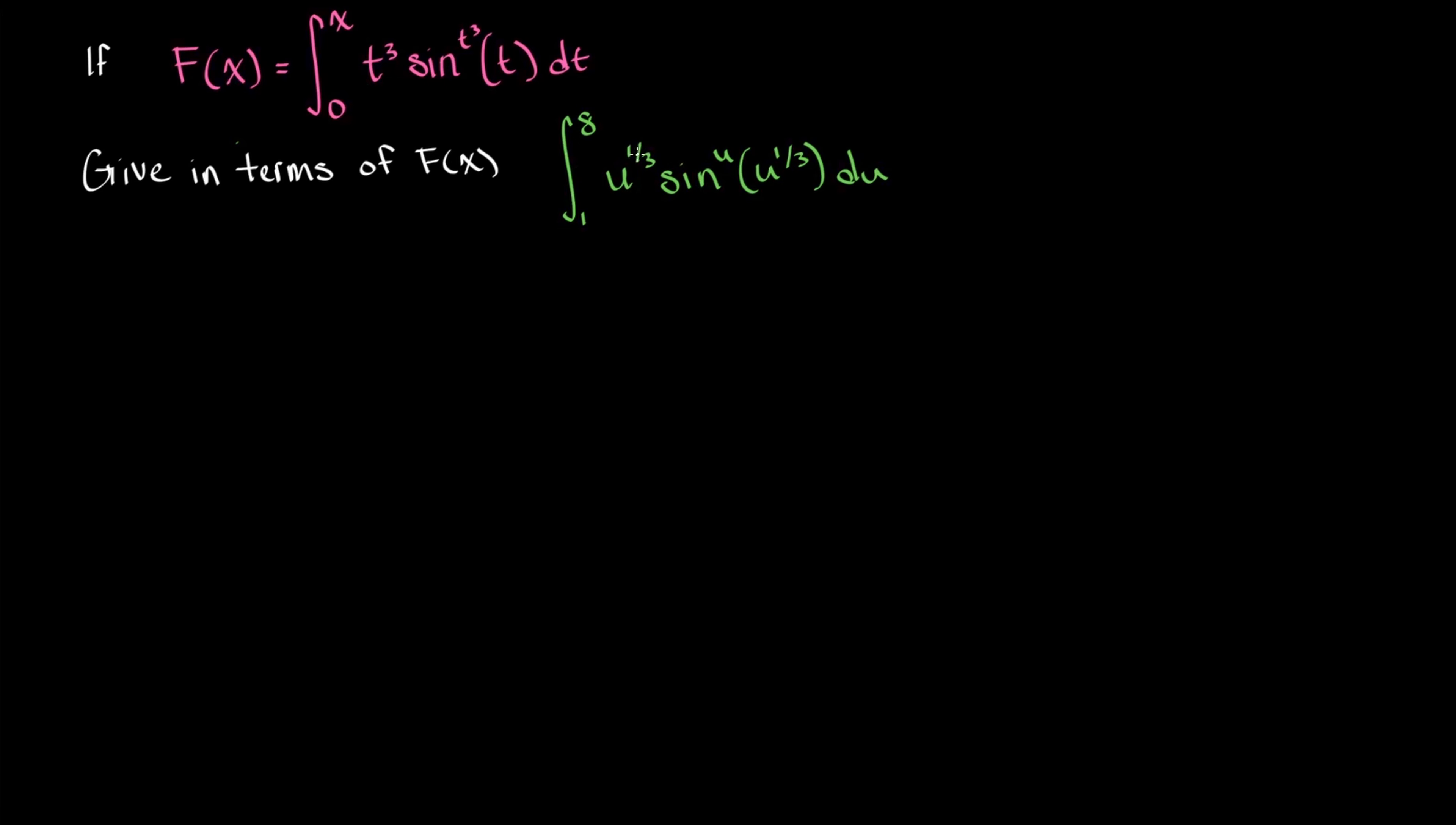So how do we do that? Well, I think a good way to start is just to see what change of variables could we make that would make these match. We see a u to the one-third power and a t cubed, so why don't we try letting u to the one-third power be equal to t cubed?